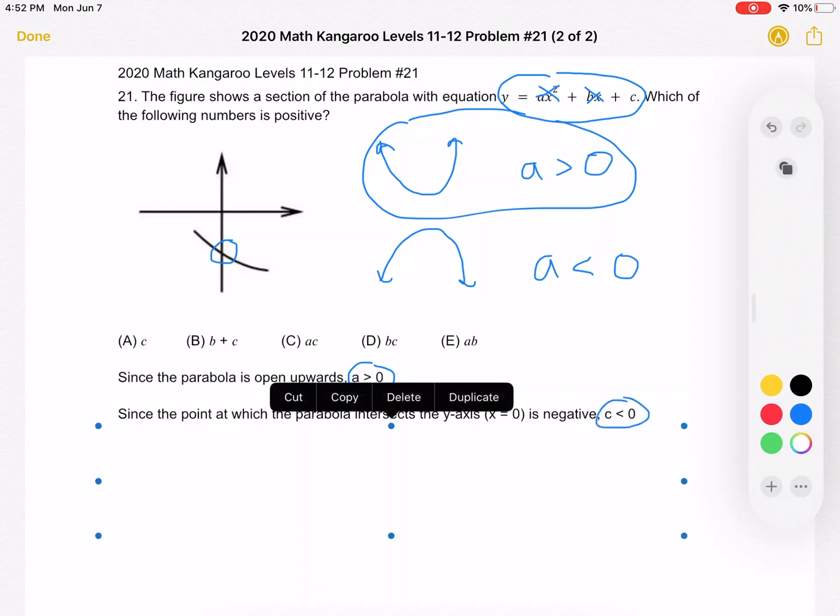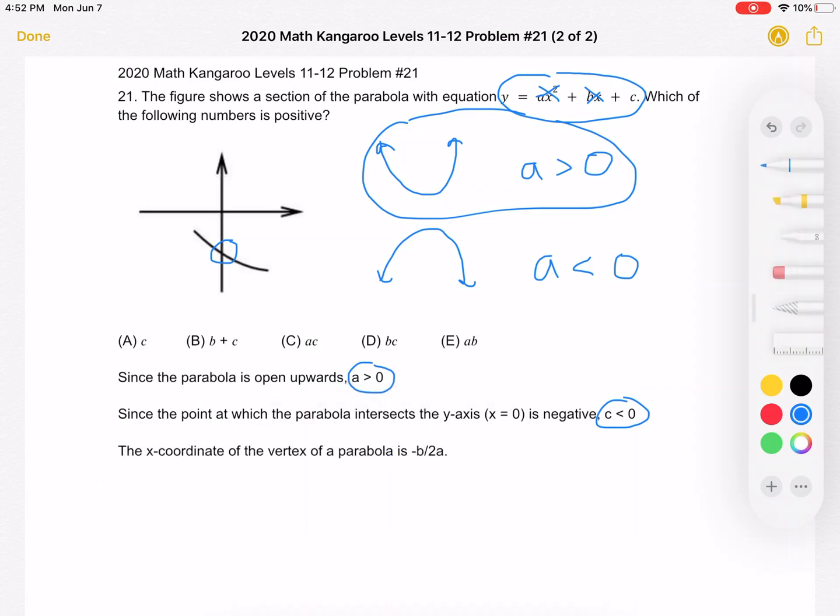Now, next, let's look at b. So we know that the x-coordinate of the vertex of a parabola is negative b over 2a. You might have learned this in algebra. If you didn't learn this in this exact format, another way you can think about it is that you basically have the sum of the two roots divided by 2 in order to find the middle point of those two roots, because the vertex should be in between those two roots.